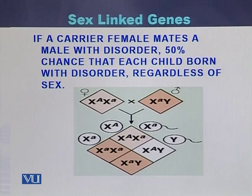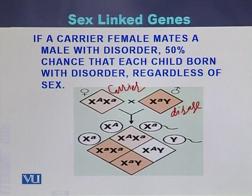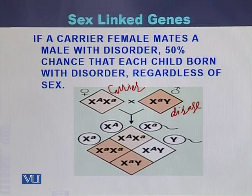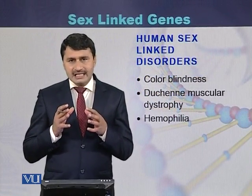The third example of a sex linked gene: if a carrier female mates with a male who has the disorder, and there is a cross between a carrier female and an affected male, then each child born to this couple — regardless of sex — either the daughter or the son will be affected with the disease. There are many diseases in humans called sex linked disorders.